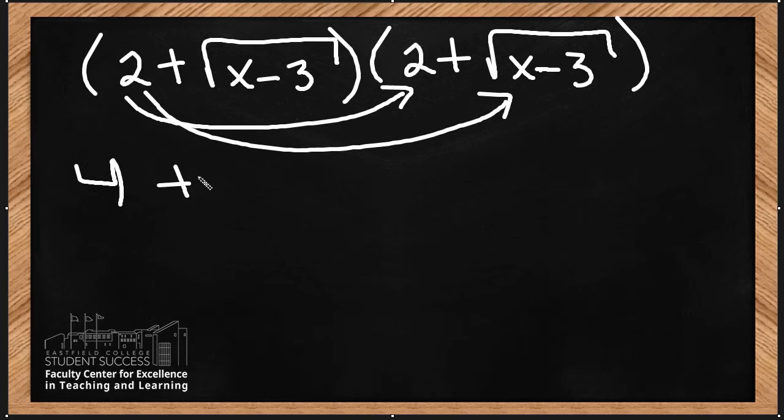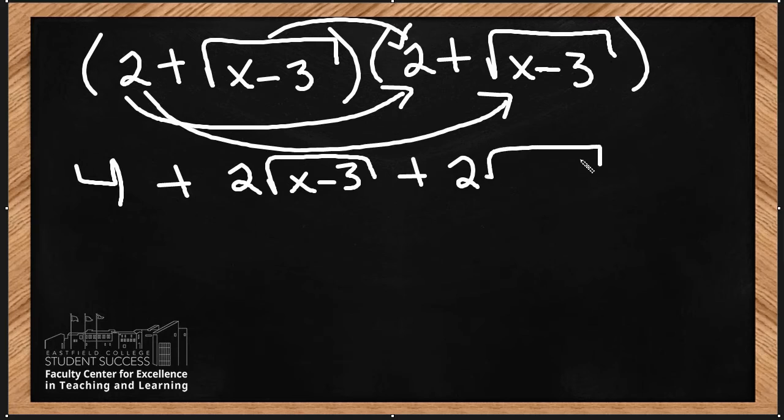Now I'm going to do the inner term: square root of x minus 3 times 2 is also 2 root x minus 3. Now I'm going to do the last term next, and it's the square root of x minus 3 times the square root of x minus 3. Because it's the same expression, you end up with x minus 3.